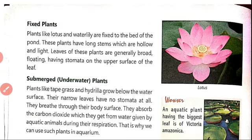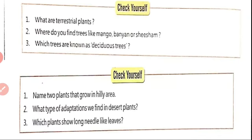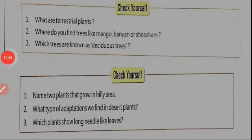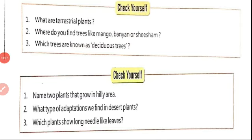I think you all understood this session. Now we are entering into the homework part. Try to get the answers for these questions: What are terrestrial plants? Where do you find trees like mango, banyan, or sesame? Which trees are known as deciduous trees? Name two plants that grow in a hilly area. What type of adaptations do we find in desert plants? Which plant shows needle-like leaves? See you in the next class. Thank you.